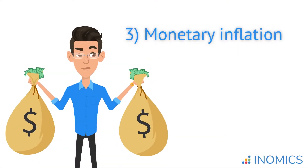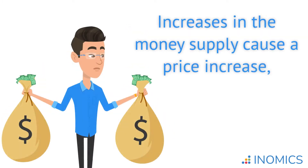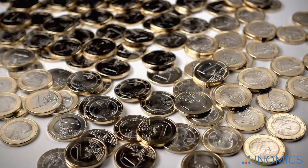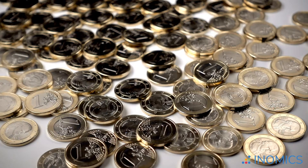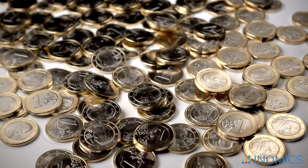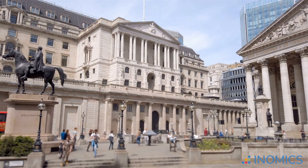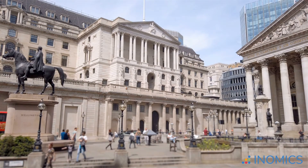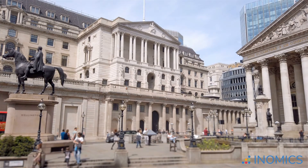The third cause of inflation is monetary inflation. This is when increases in the money supply can cause a price increase, even if the underlying economic activity hasn't changed. Since more money is now chasing after the same amount of economic output, prices increase. Monetary inflation can be caused by governments printing too much money or the central bank decreasing the interest rate too far.